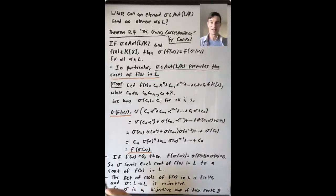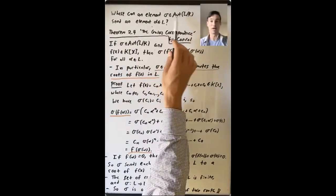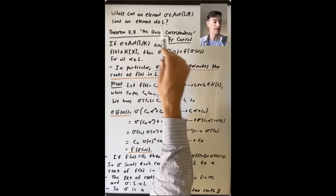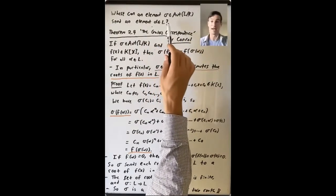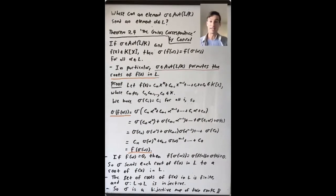In this last video of this lecture, I want to focus on this question: where can an element sigma in Aut(L/K) send an element alpha in L? In the examples we've looked at so far, for example in the case where L was ℂ and K was ℝ, we saw that an element of Aut(ℂ/ℝ) was determined by where it sent the special element i.